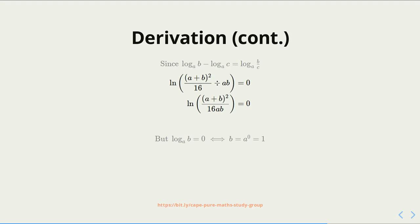By the definition of logarithms, we know that the log of b to the base a equals 0 if and only if b is equal to a to the 0. That's by the definition of logarithms, and we know that a raised to the power of 0 is equal to 1 for any valid number a. Therefore, we can conclude that (a plus b) squared on 16ab is equal to 1.